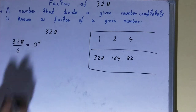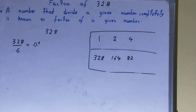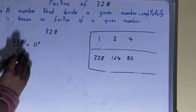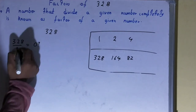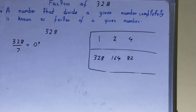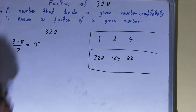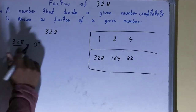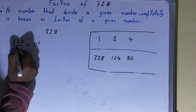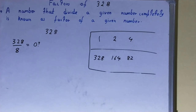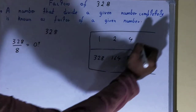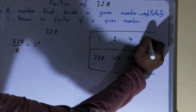Let's check with 6: 328 is not divisible by 6. Check with 7: 7 does not divide 328 evenly, not possible. Check with 8: 8 times 41 equals 328, yes — 8 is a factor, so we write it in the list.